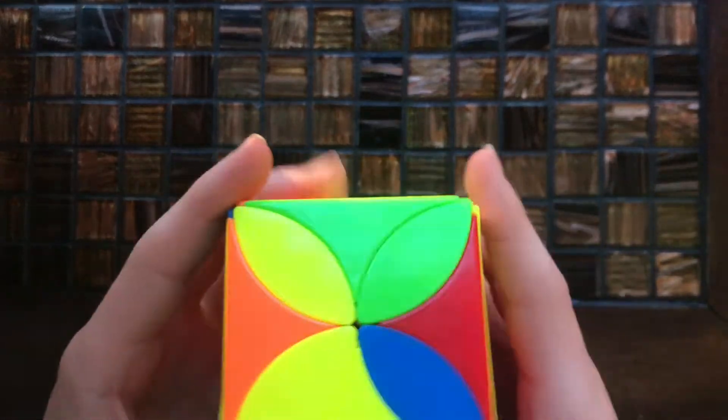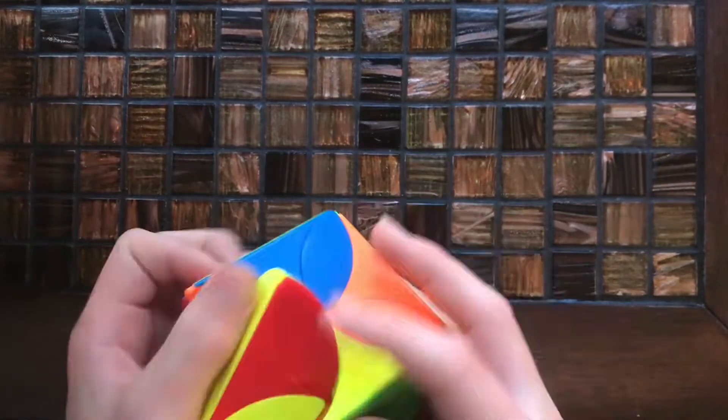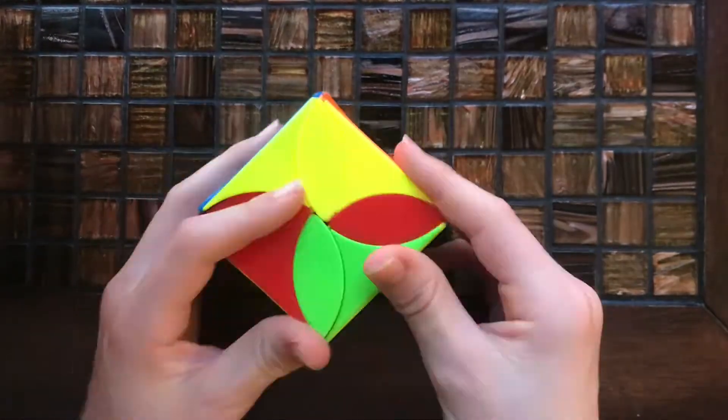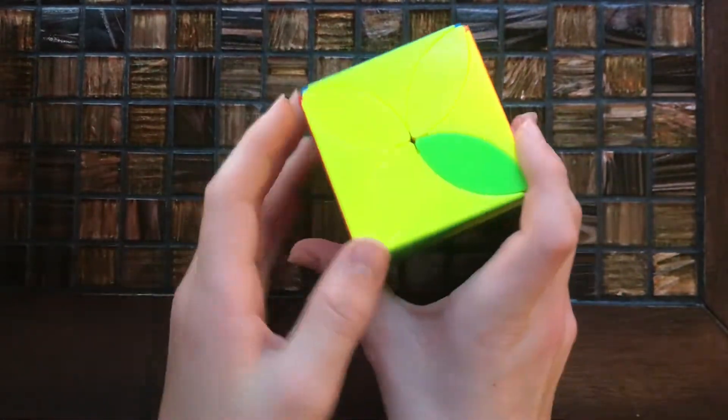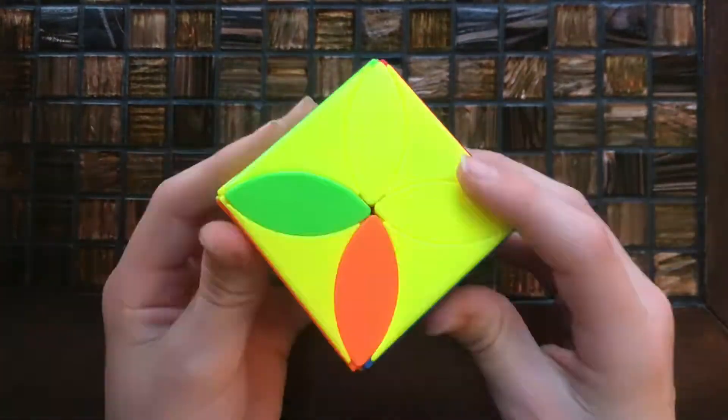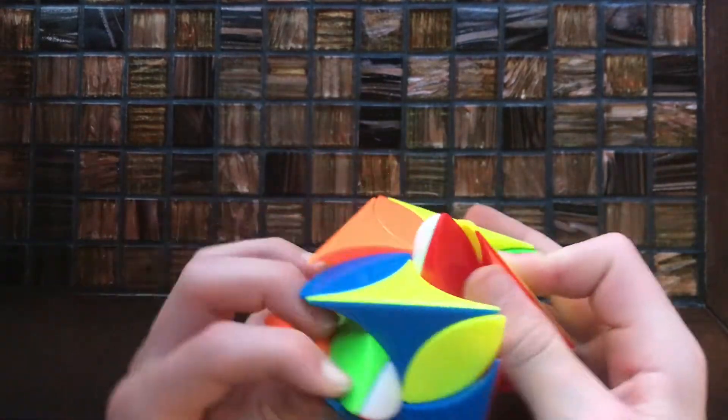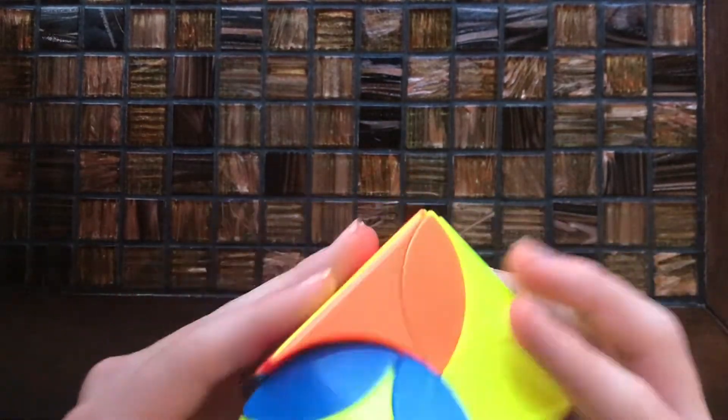All right, the middle layer is done. All right, now we just have two pieces to swap. Hmm, I haven't solved this in a while. This is kind of confusing me.